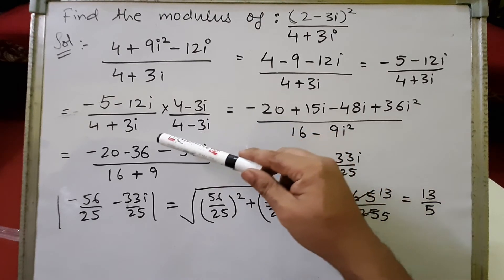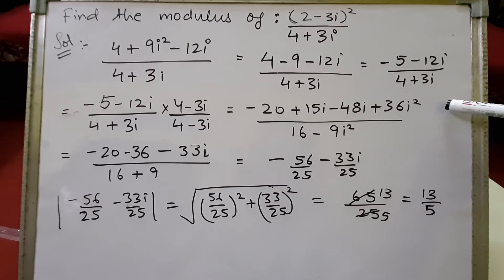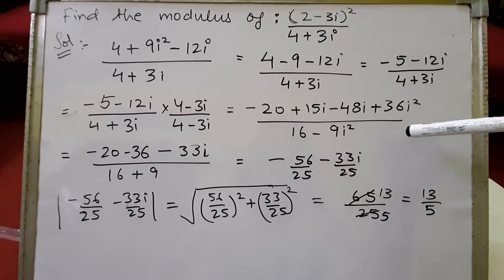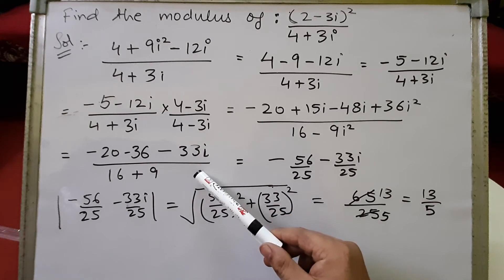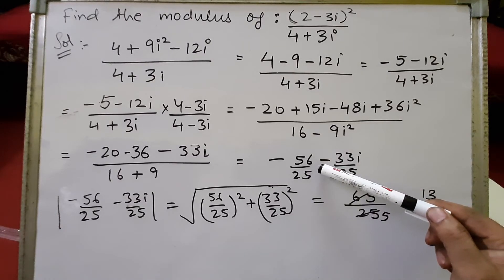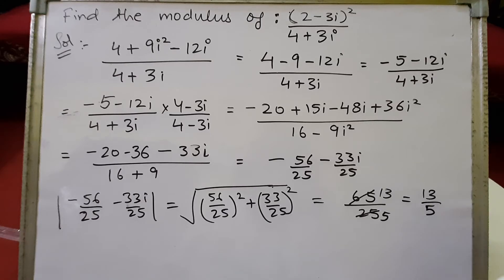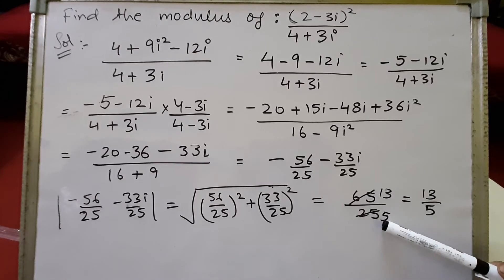We now multiply numerator and denominator by the conjugate of the denominator, 4 minus 3i. The numerator gives minus 20 plus 15i minus 48i plus 36i squared, and the denominator gives 16 minus 9i squared using the difference of squares formula. Substituting i squared equals minus 1, the numerator becomes minus 20 minus 36 minus 33i, giving minus 56 minus 33i, over 16 plus 9 equals 25. So the complex number is minus 56 upon 25 minus 33i upon 25. Taking the modulus: under root of 56 squared plus 33 squared, all over 25, simplifies to 13 upon 5. Please note down the solution.